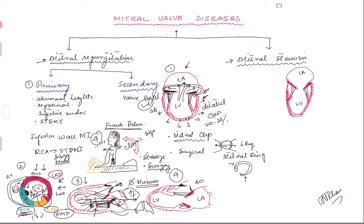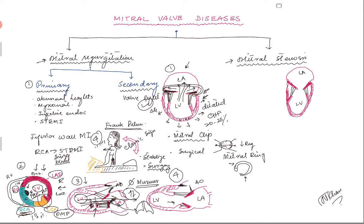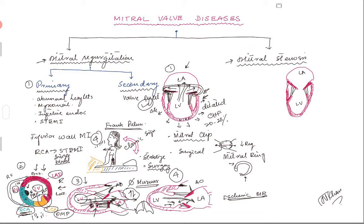There is also a milder, late complication of RCA infarction called ischemic MR. Rather than rupture, the posterior medial papillary muscle gets scarred from the infarction, causing the posterior leaflet to retract. Unlike acute papillary muscle rupture, you can hear a murmur here - since it develops over weeks, the left atrium has time to dilate. If there is a massive amount of MR, the patient may need mitral valve repair or replacement.